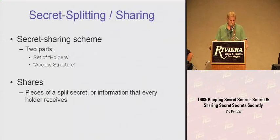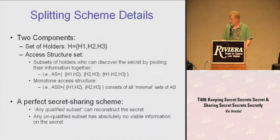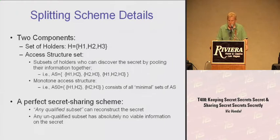Secret splitting: a secret sharing scheme has two parts — a set of holders and an access structure. The access structure is the subset of holders who can recover the secret by pooling their information together — shares or pieces of a split secret that every holder holds. Here's an example where we have a set of holders H1, H2, and H3, and an access structure set. This subset of holders is who can discover the secret by pooling their information.